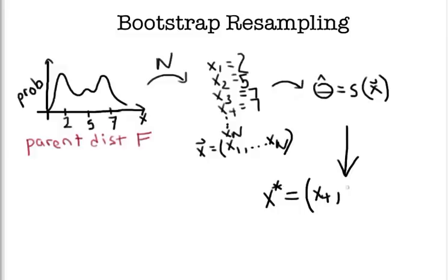then we get x1, then we get x3, maybe we get x1 again. So we sample with replacement, so we can get the same values more than once. All the way out to some xn. So this is of length n vector. So I'll denote this as the first bootstrap resample we've done.